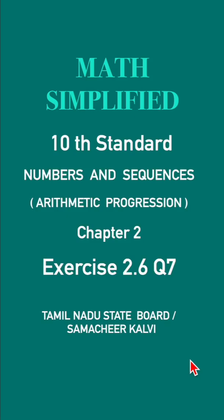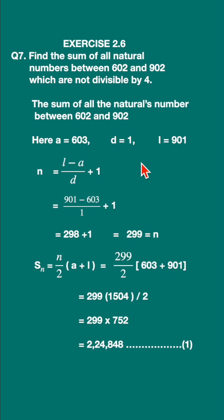Standard exercise 2.6, question 7. Find the sum of all natural numbers between 602 and 902 which are not divisible by 4.